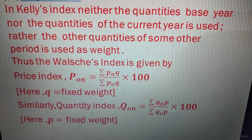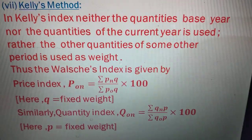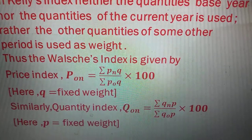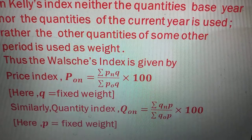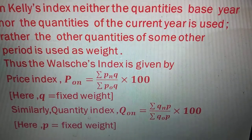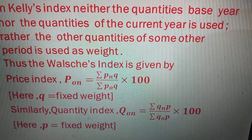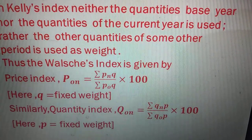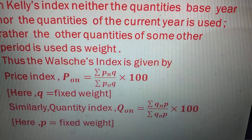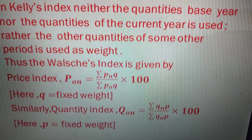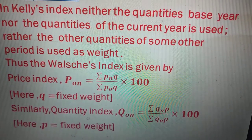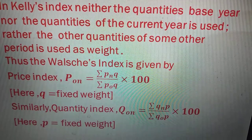Here q equals fixed weight. Similarly, the quantity index Q-suffix-on equals summation of q-suffix-n multiplied by p, divided by summation of q-suffix-o multiplied by p, then multiplied by 100. Here p equals fixed weight.